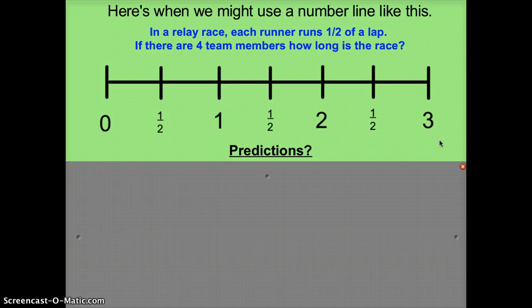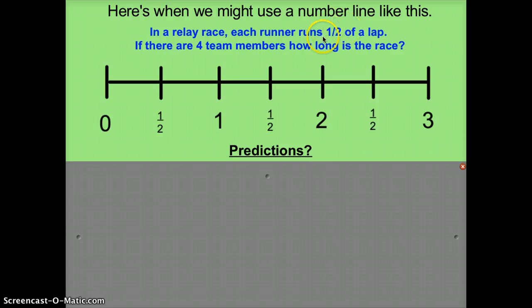Let's take a look at a problem and see how we might use the number line to solve it. It says: in a relay race, each runner runs half of a lap. If there are four team members, how long is the race? Each person is running half of a lap, and there are four people, so we should see one-half four times.